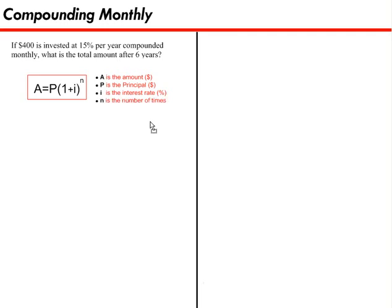And the exponent is N, and it's the number of times the money is being compounded. So keep your eye on I and N, because we'll do a little bit of converting with those numbers in this problem.